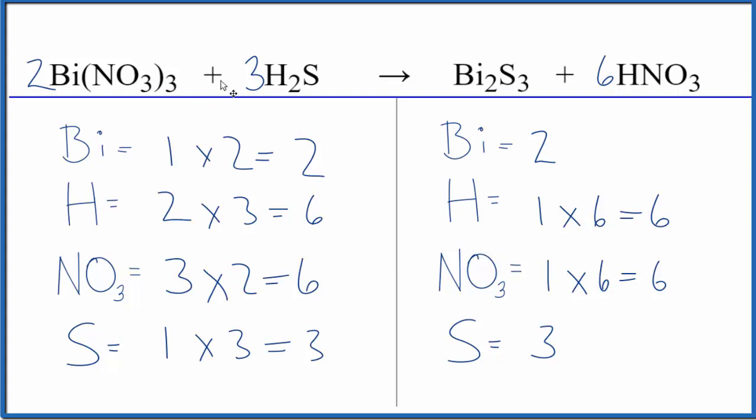If we were to look at the states here, nitrates are very soluble, so let's put aqueous. And I think this H2S would be aqueous as well. Bismuth sulfide, that's insoluble, so that's going to be a solid. That would be a precipitate that falls to the bottom of our test tube. And then HNO3, nitric acid, that's a strong acid, so that would be soluble. So those are the states.